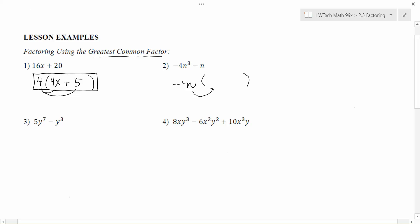Negative n times what will give me -4n³? Well, I already have the negative taken care of, I do need a 4. I have one n but I need n³, so I need two more n's, so I could write that as 4n². And negative n times 4n² will give me -4n³. Then I have to think, negative n times what will give me -n?